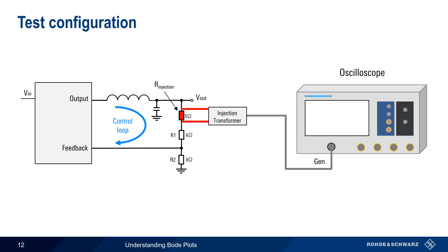The disturbance signal is created by the internal generator of our oscilloscope. The two channels of our oscilloscope are connected to either side of the injection point, and, based on the measured values, the oscilloscope generates and displays the Bode plots.